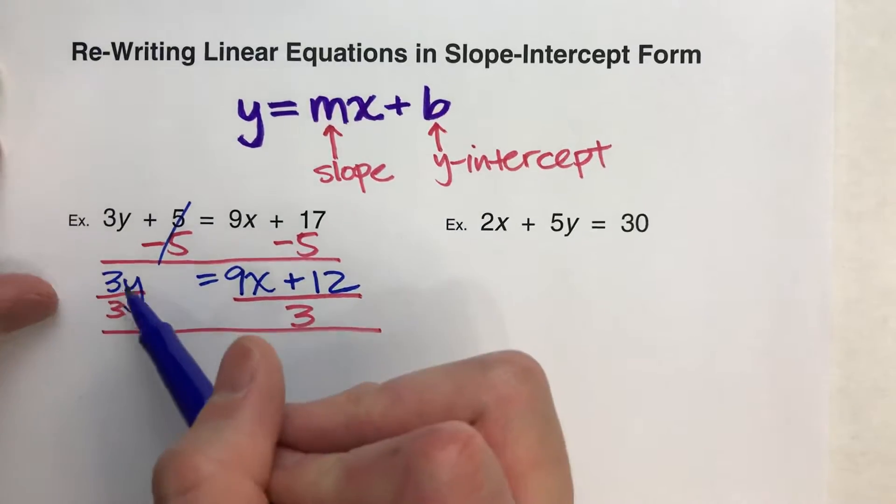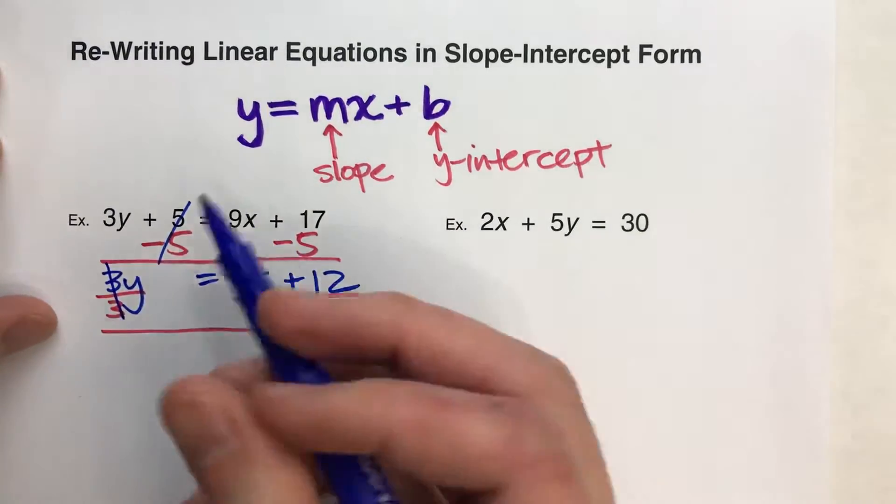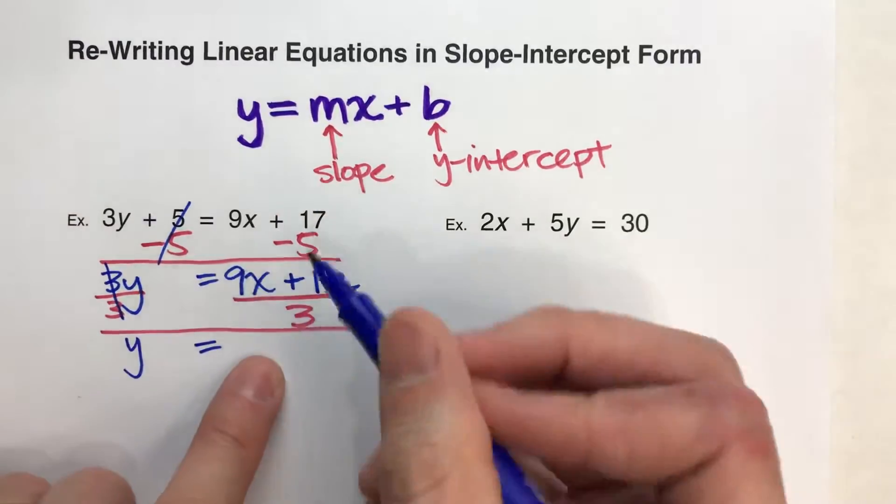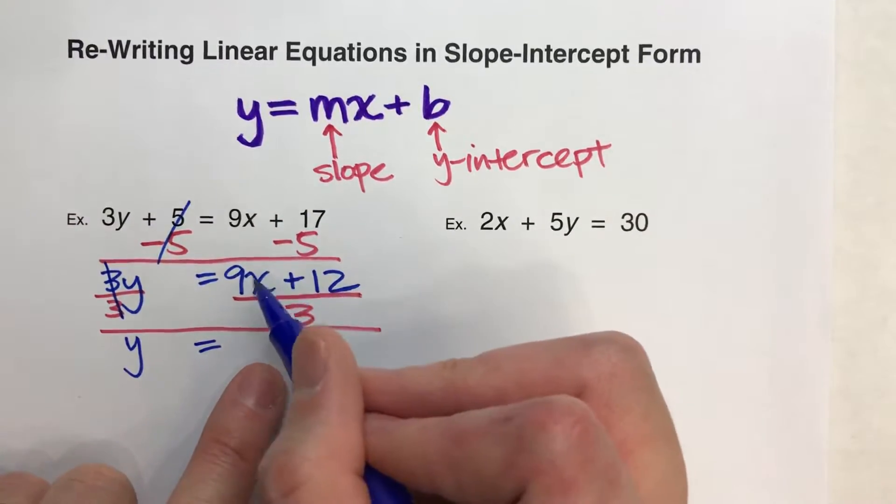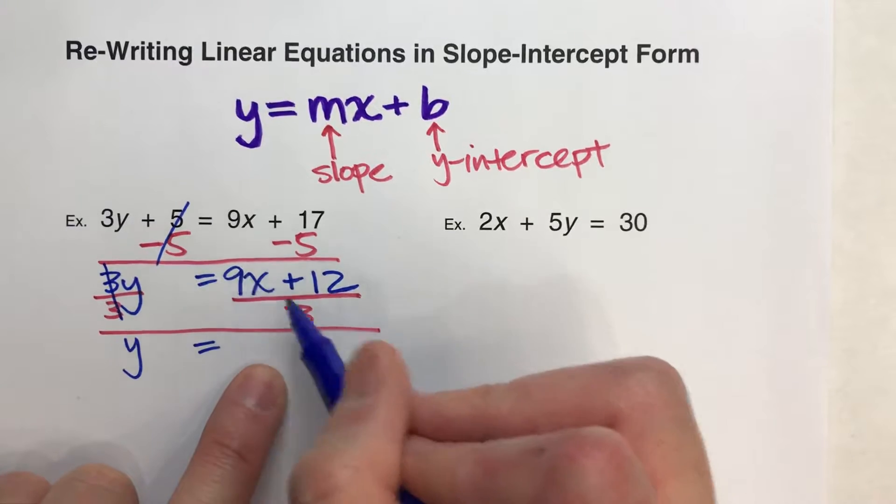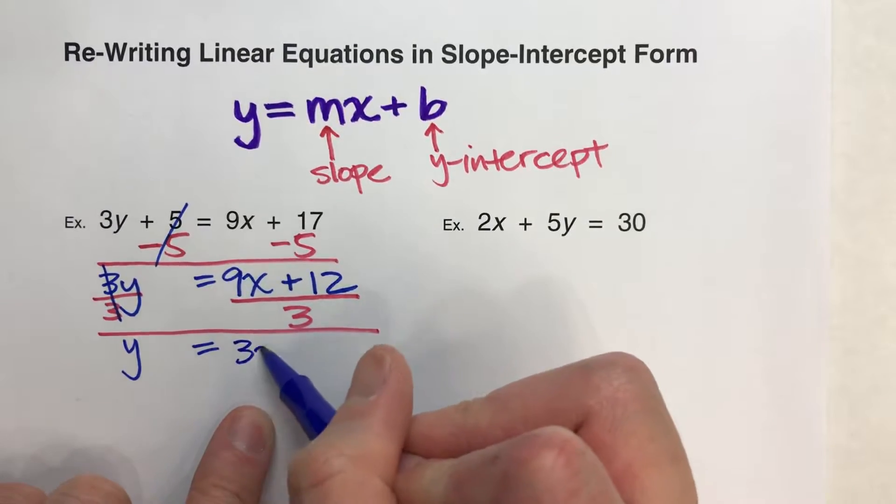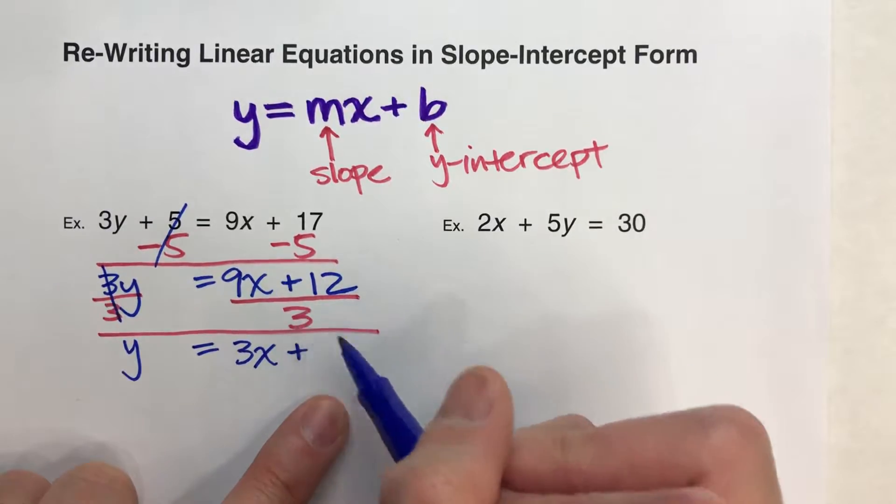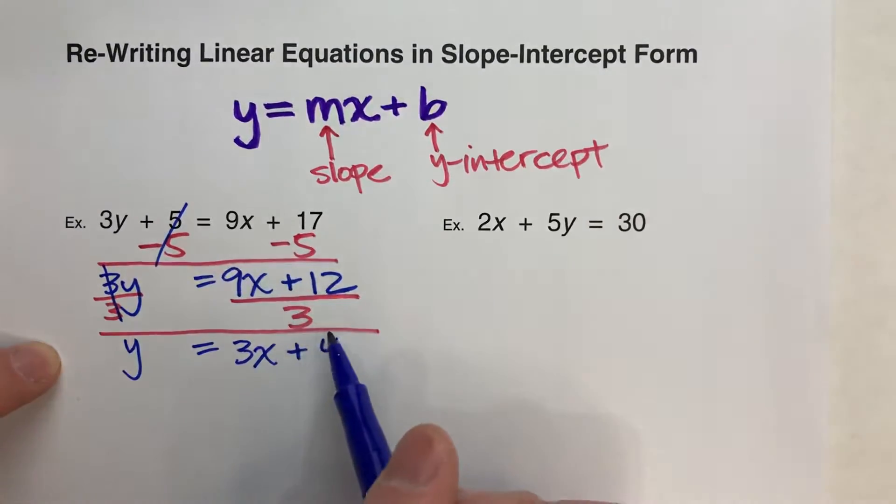When we do that, multiply and divide by 3 undo each other, but the y drops down. The equals drops down. And now, when I divide this by 3, I'll do each piece. 9x divided by 3 is 3x plus 12 divided by 3 is 4.